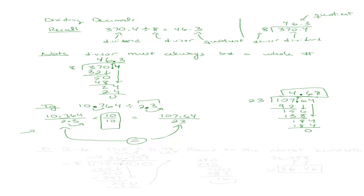There are a few more of these in the textbook. Sometimes what's going to happen is you'll get a non-ending decimal. In that case, you'd usually be asked to round to the nearest hundredth or thousandth. Let's try dividing 17 and 5 tenths by 48 hundredths and round to the nearest hundredth. Because our divisor is not a whole number, I need to move the decimal point to the right two times — actually, let me correct that: this makes my division 1715 divided by 48, not seventeen thousand five hundred.